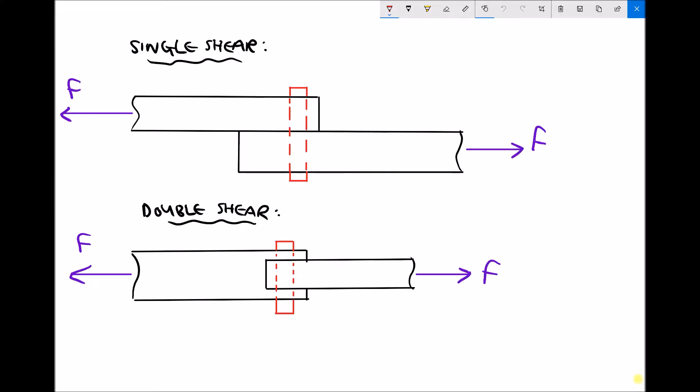In the previous video we looked at the effects of shear on a block of material. Now the key distinction there was that the shear forces were offset by a distance. There was a distance between the line of action of the two forces.